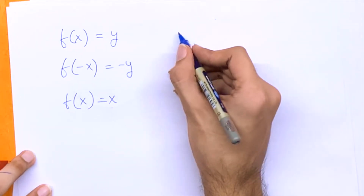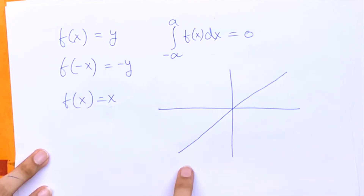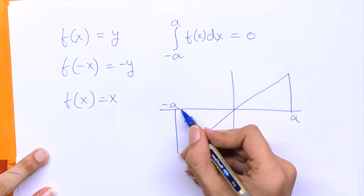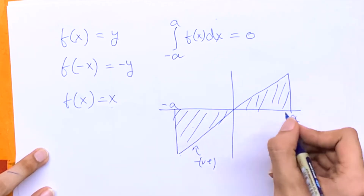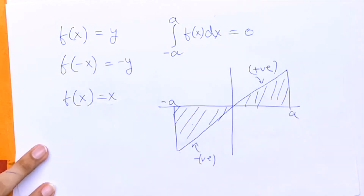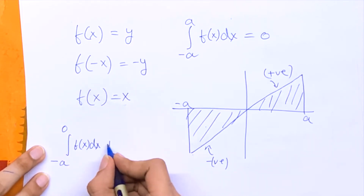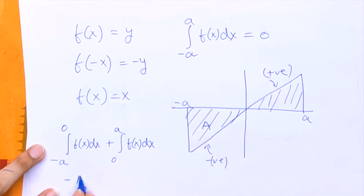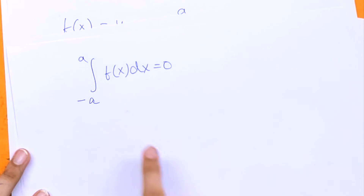If we want to find the integral of f(x) from minus a to a for an odd function, the answer is 0. Taking f(x) = x as an example: the area under the left part (from minus a to 0) is the same magnitude as the area from 0 to a. However, the left part is negative (below the x-axis) and the right part is positive (above). Calling that area A, we get -A + A = 0. So the property of an odd function is: the integral from minus a to a of f(x) dx equals 0.